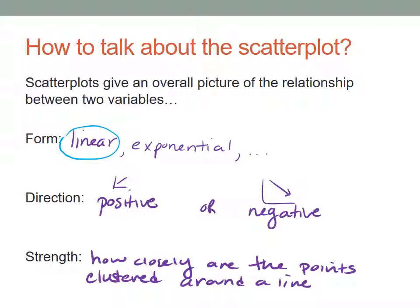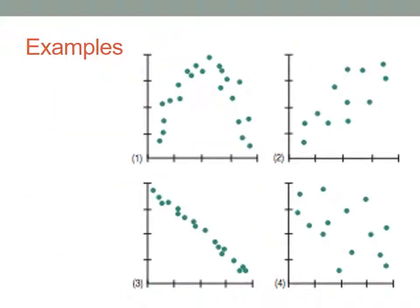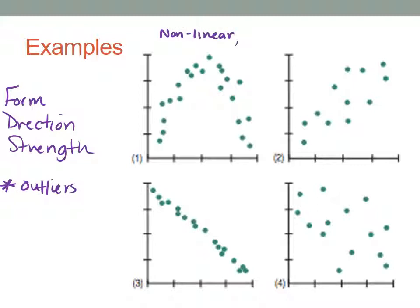Let's look at some examples and talk about how we would describe each. I want to talk about form, direction, and strength. If there are any values that are strange, we want to mention those as well. When we look at example number one, this is definitely not linear. In this case, we're going to say nonlinear. We're not really interested in the direction necessarily, but we would say it's fairly strong because in its nonlinear shape it's pretty clustered around that shape.